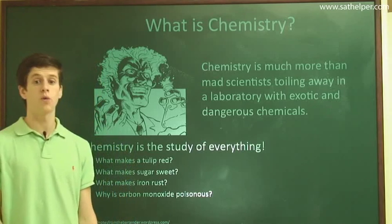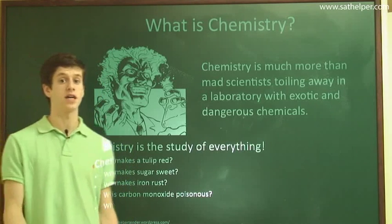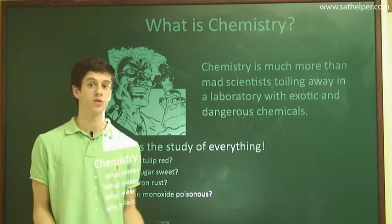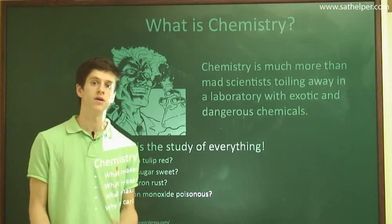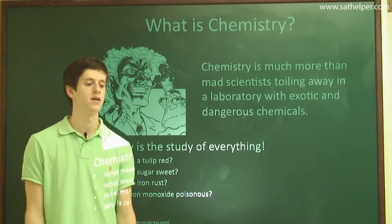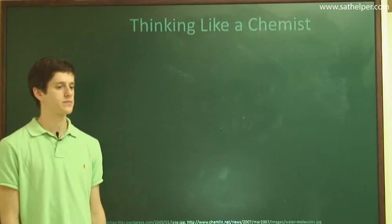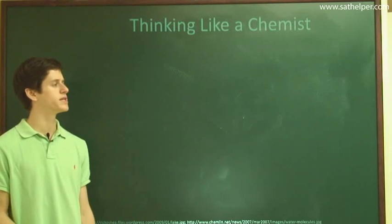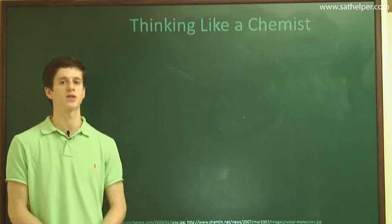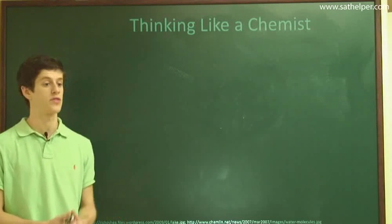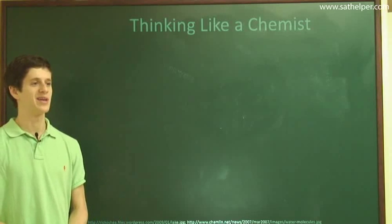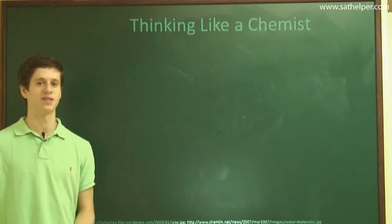Explaining why carbon monoxide is poisonous is explaining how chemicals interact with the human body, which is just another set of chemicals. And so, in order to do this, chemists think in a special way. They don't think like you or I think when we see the world.